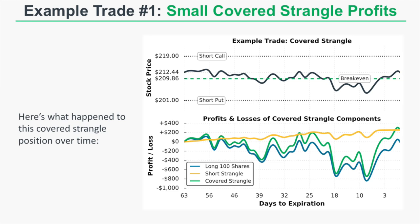The covered strangle outperforms long shares alone because strangle profits offset any losses on the shares and provide a profit boost. Since the stock ends unchanged but we profited from the short strangle, the covered strangle is profitable overall. This shows that when the stock price stays between your short strikes, a covered strangle outperforms a buy-and-hold position of 100 shares.